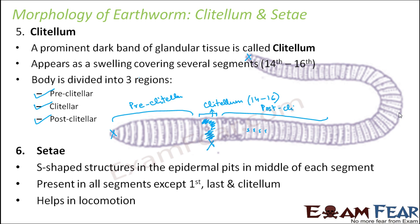Bristles hold one section of the worm firmly to the ground while another part of the body protrudes forward. For example, one portion of the body is stiff while the front portion moves forward. Then that portion moves and the next portion becomes stiff. This alternating pattern continues, and that is how movement actually happens in the earthworm. Segments contract and relax independently — it is not that all segments contract and relax together, because in that case the earthworm would not move at all.